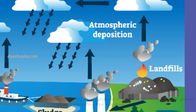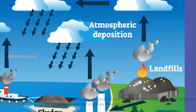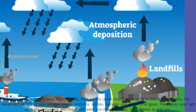Landfills. Landfills can initially cause air pollution by emitting dust and gases such as methane, carbon dioxide, etc. Landfill gases are produced when bacteria break down organic wastes. Methane and carbon dioxide make up 90 to 95% of landfill gases. The remaining 5 to 10% includes nitrogen, oxygen, ammonia, sulfides, hydrogen, and various other gases. These gases rise high up in the atmosphere, get mixed with water and other pollutants, and fall down as acid rain.